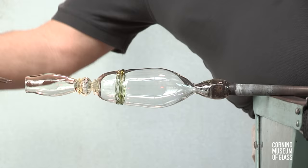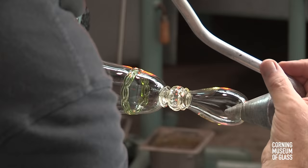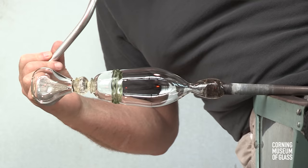After reheating, the rim is formed. The soffietta, or puffer, is used to cool the knop, and then used to further inflate the foot.